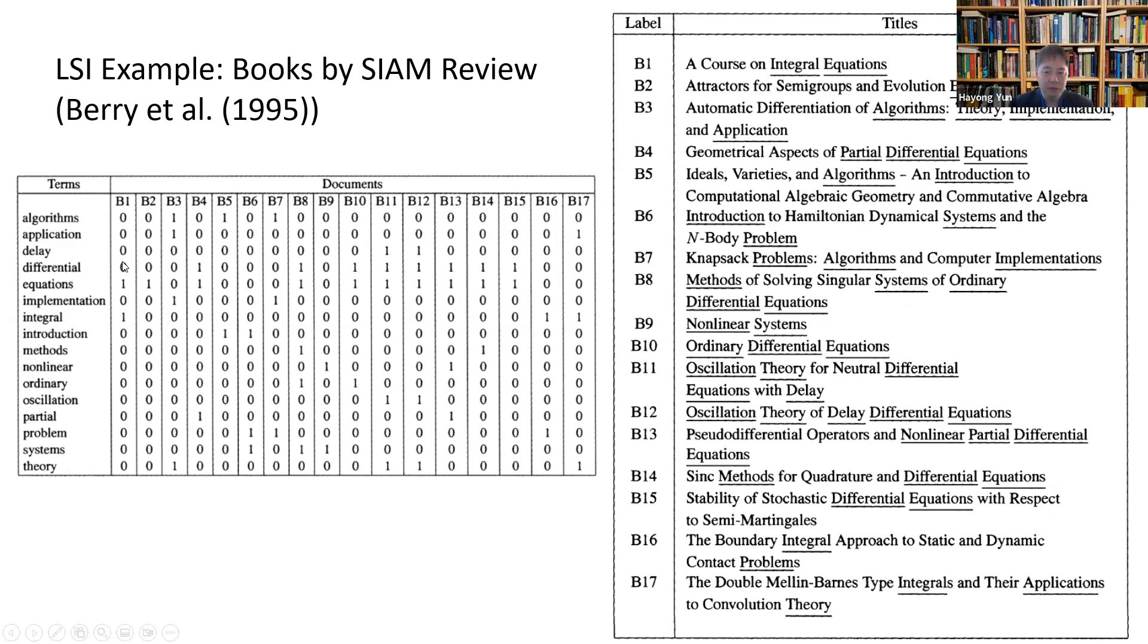If it's zero, the title doesn't contain a particular word. One if it does contain the word. For example, 'equation' is here, so it's one. 'Integral' is here, so it's here, and so on.